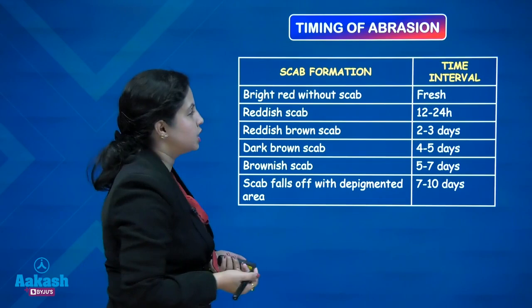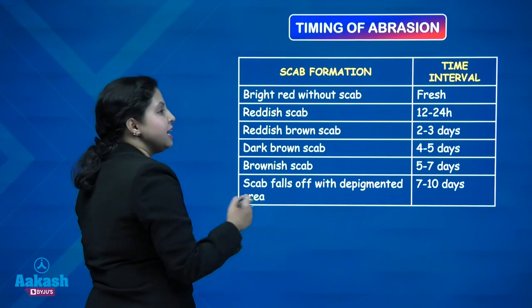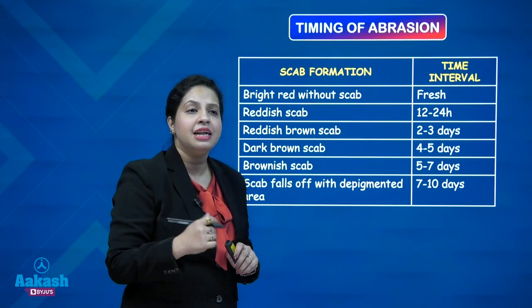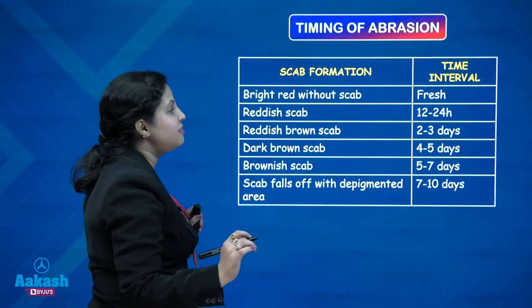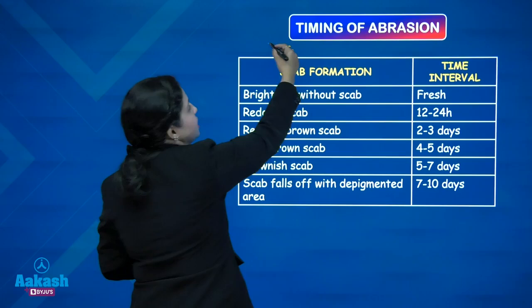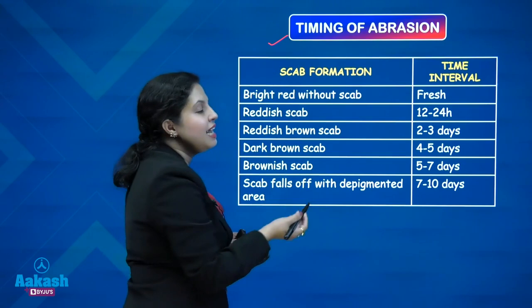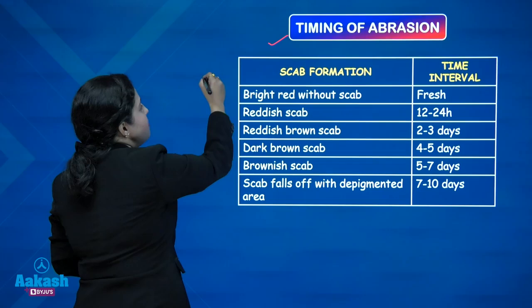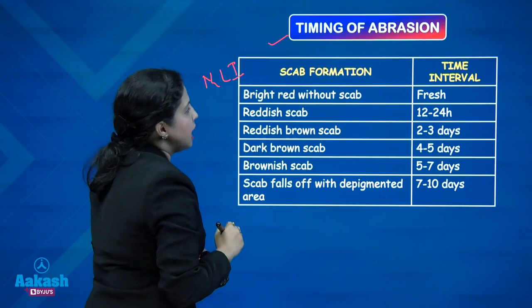Timing of abrasion — this is a most commonly asked question. Abrasion heals very rapidly; it causes minimum bleeding and generally heals in less than a week with no permanent disfiguration and no permanent scab formation. The scab formation indicates the time duration or time interval since the injury has taken place, which is of medico-legal importance to correlate the time of hurt to the timing of abrasion.